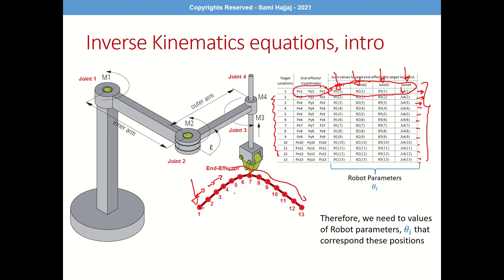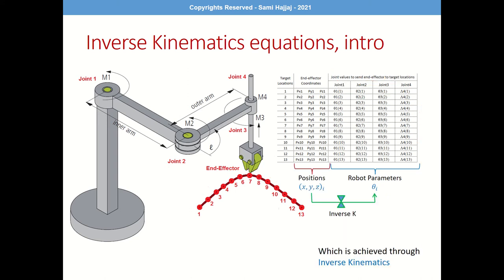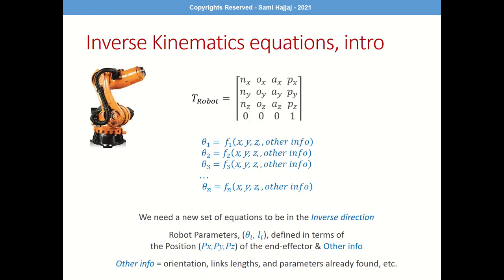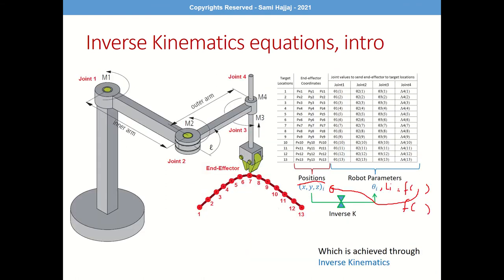To solve this puzzle we need the values of theta_i and L_i, and that is where inverse kinematics comes in. Inverse kinematics does exactly that: given positions and other information, we find the corresponding robot parameters. This could be in the form of values as seen in the table, or in the form of functions — once you develop the functions, whatever values you have, you plug in and find the corresponding values.